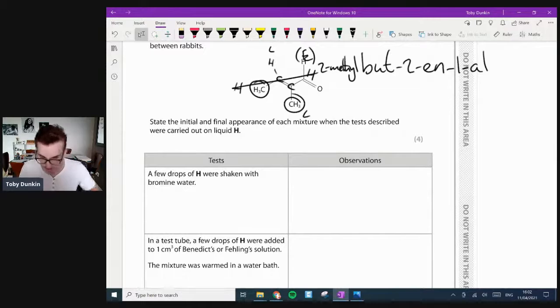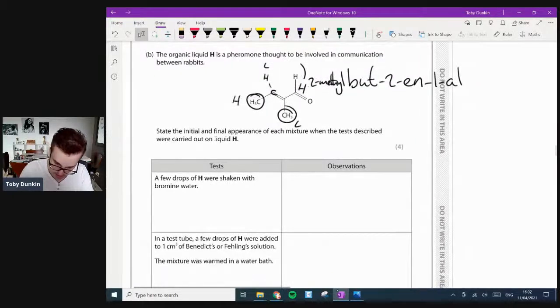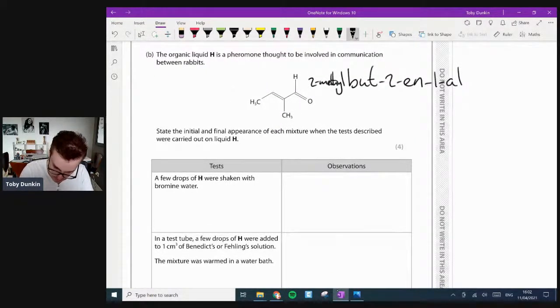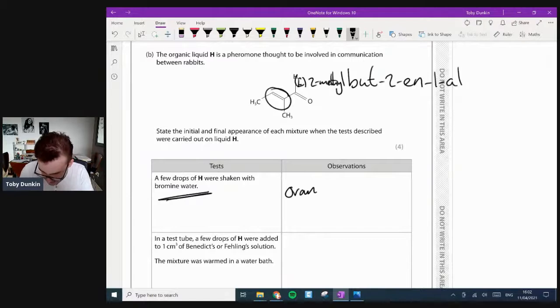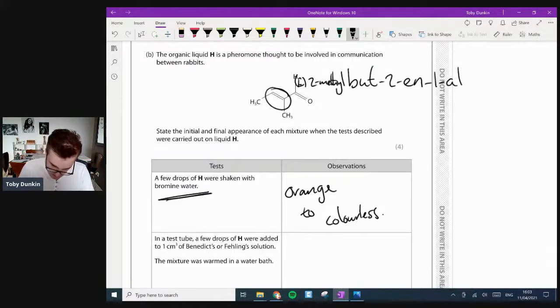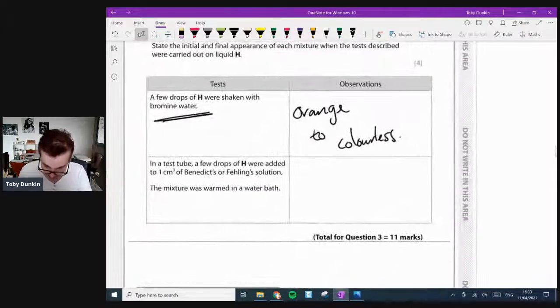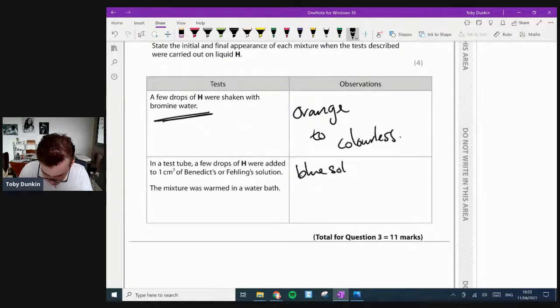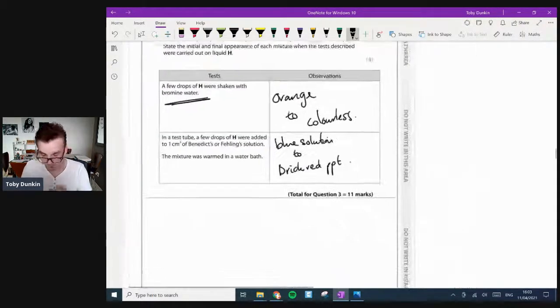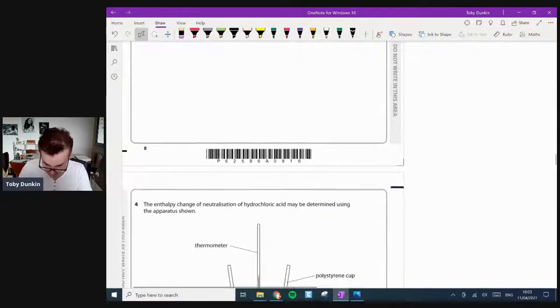State the initial and final appearance of each mixture when the test described was carried out. Bromine water? Double bond. Orange to colourless. Next, a few centimetres of Fehling's or Benedict's. So that's a test for aldehydes. It's going to go from a blue solution to brick red precipitate. Next, a test for aldehydes and ketones. And that's an aldehyde, so I will flag it.